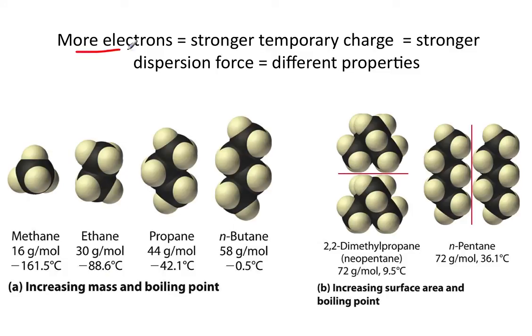And another thing you should know is that the more electrons there are in a cloud, the stronger that temporary charge, the more they're going to shift, and the bigger that charge. So therefore, the stronger the dispersion force, or the attraction between oppositely charged sides. And as a result, we're going to end up with different properties.